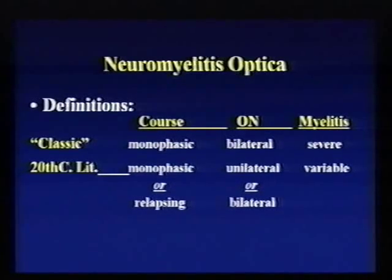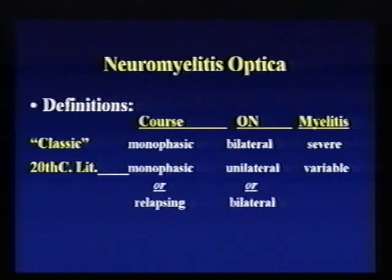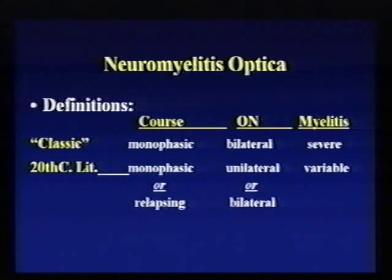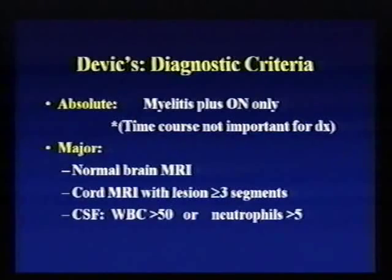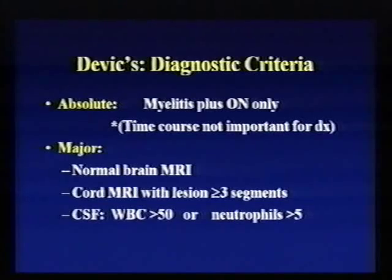Despite the fact that the monophasic definition is still widely written, if you look back at the literature through the entire 20th century, you can see that many cases called Devic's have in fact behaved quite differently. Devic's can be relapsing — this has been reported back to the 1920s. The optic neuritis can affect both eyes but can also affect only one eye. And the myelitis, although usually severe, is not always severe. There are a number of diagnostic criteria developed in the last 15 years to separate Devic's syndrome from multiple sclerosis.